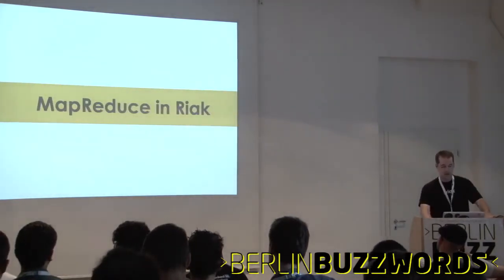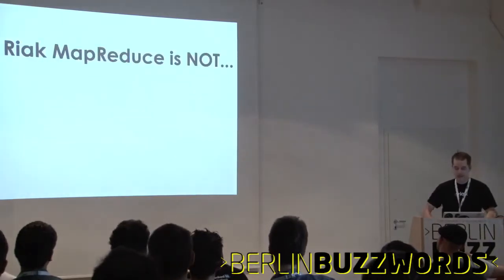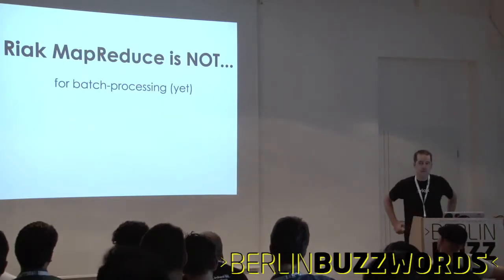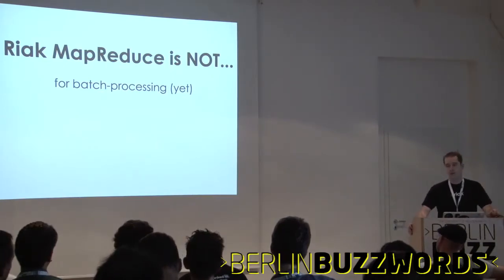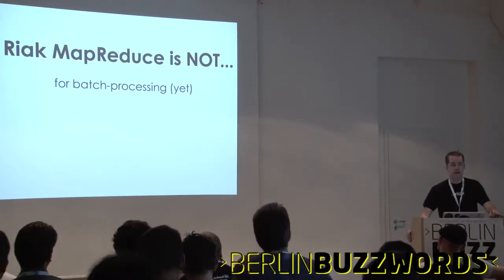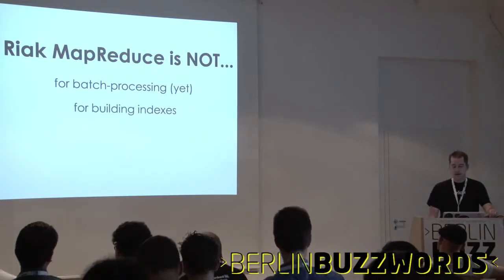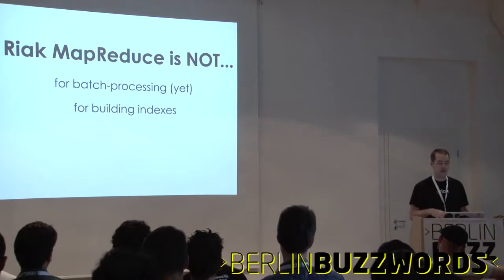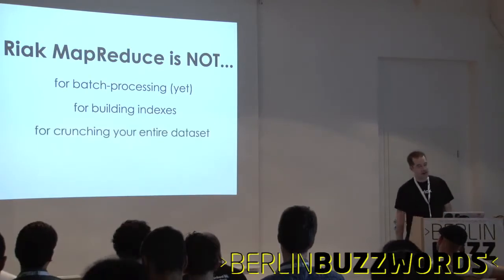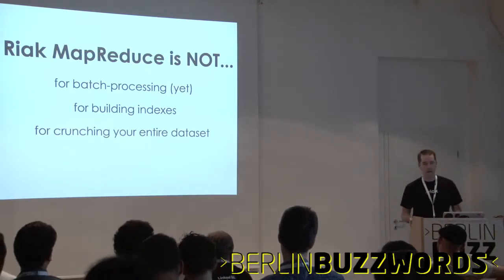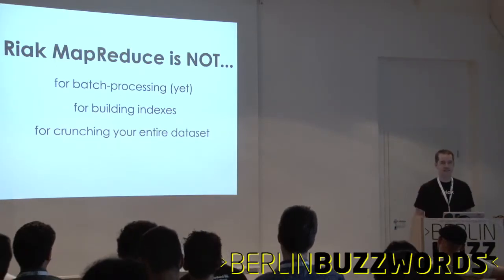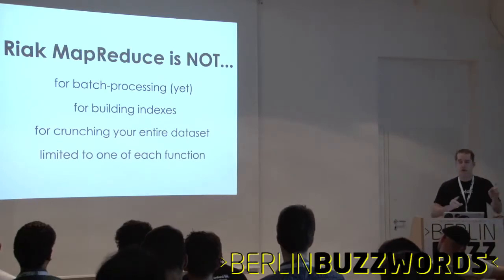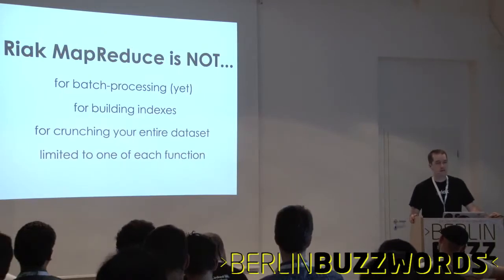Riak MapReduce is not for batch processing — if you want a job that takes hours, don't use Riak yet. It's also not for building indexes like CouchDB does, and not for crunching your entire dataset. You don't want to list all keys and crunch that data. A quirk of Riak's MapReduce: you're not limited to one map and one reduce — you can do as many as you want in any combination and order, as long as the inputs to the functions make sense.